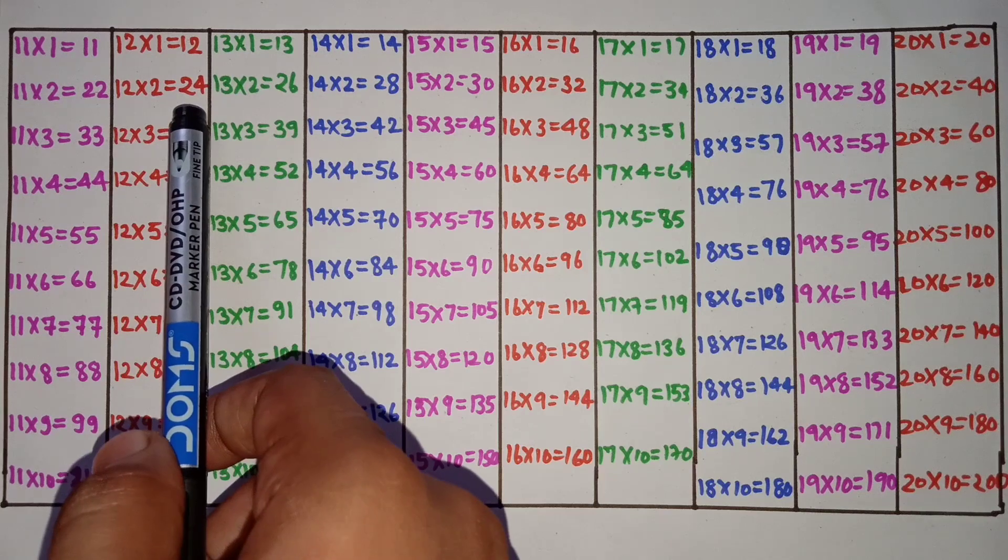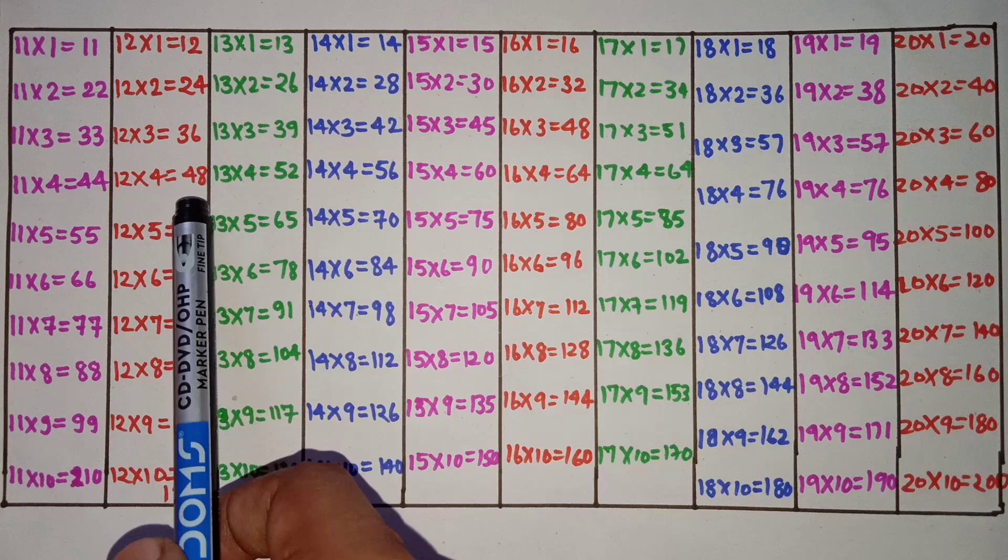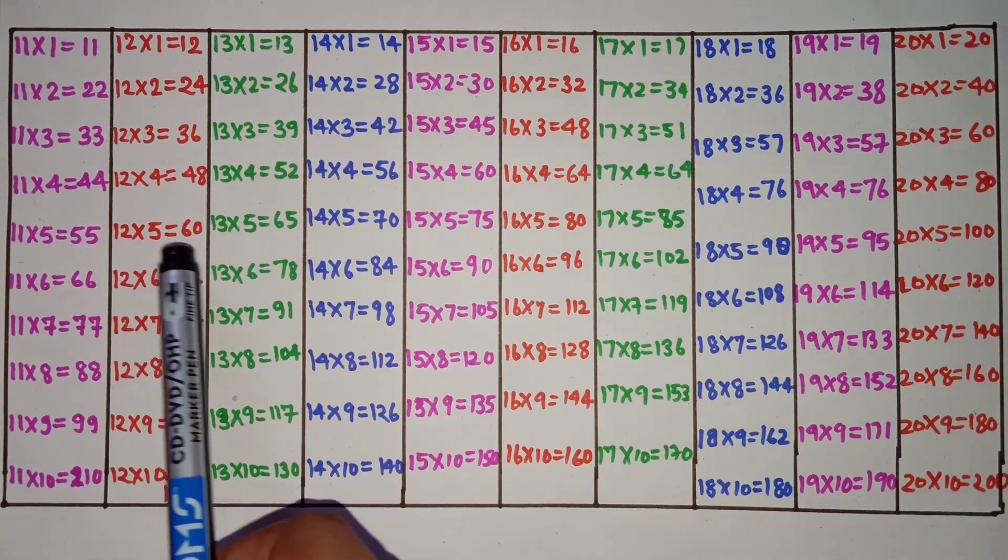12 ones are 12, 12 twos are 24, 12 threes are 36, 12 fours are 48.